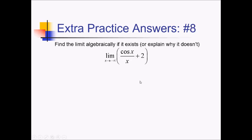For this problem, I recognize that cosine of x over x, as x goes to negative infinity, this is a bottom-heavy function, which means this is going to 0. Which means we're really just doing 0 plus 2 when all is said and done, and that comes out to 2.